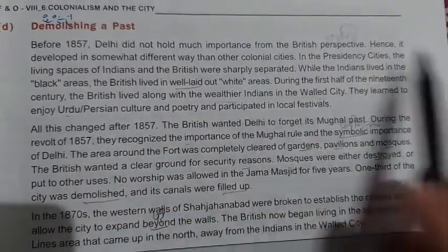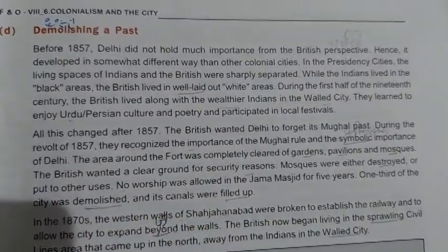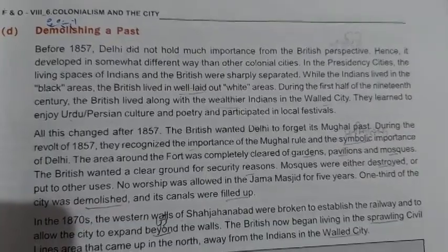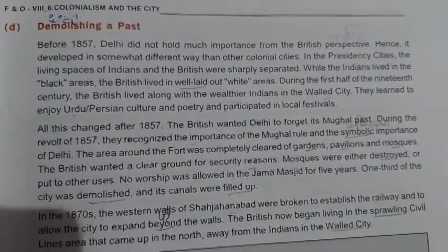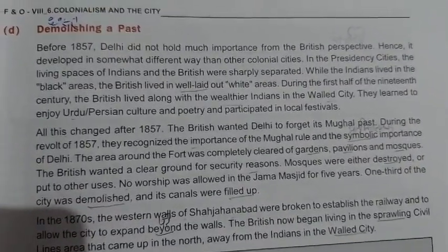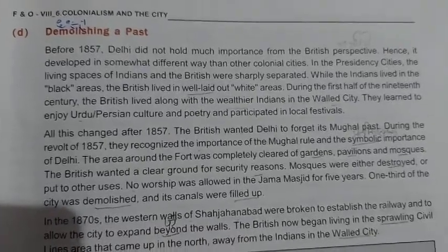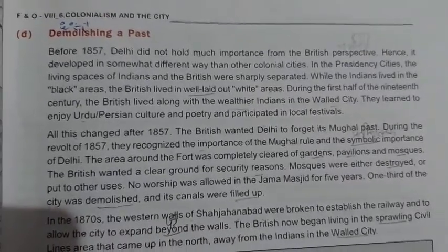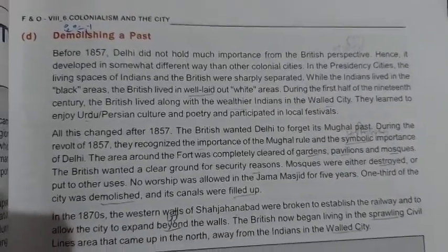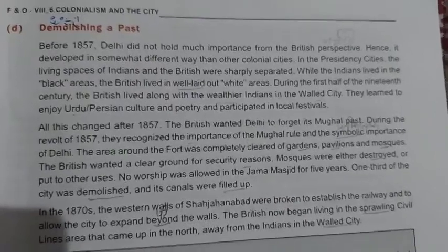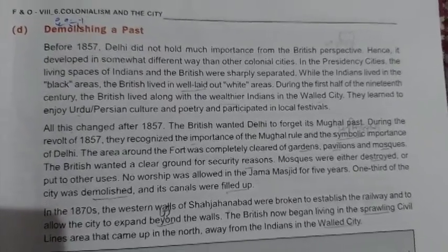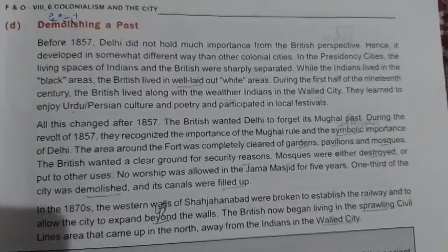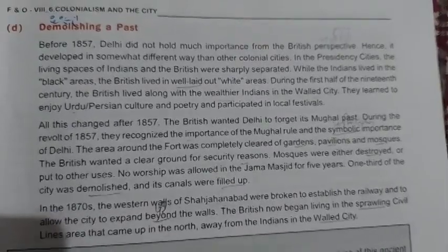Before 1857, Delhi did not hold much importance from the British perspective. Hence, it developed in a somewhat different way than other colonial cities. In the presidency towns, the living space of Indians and British was sharply separated — while the Indians lived in the black areas, the British lived in well laid-out white areas.